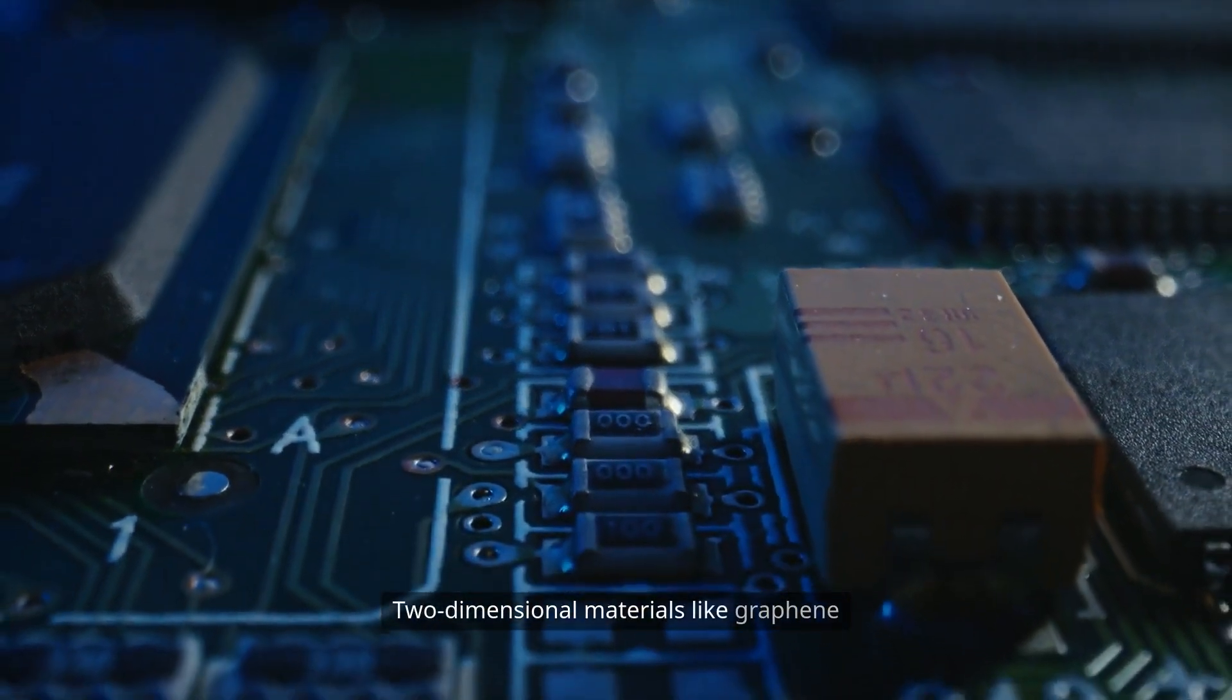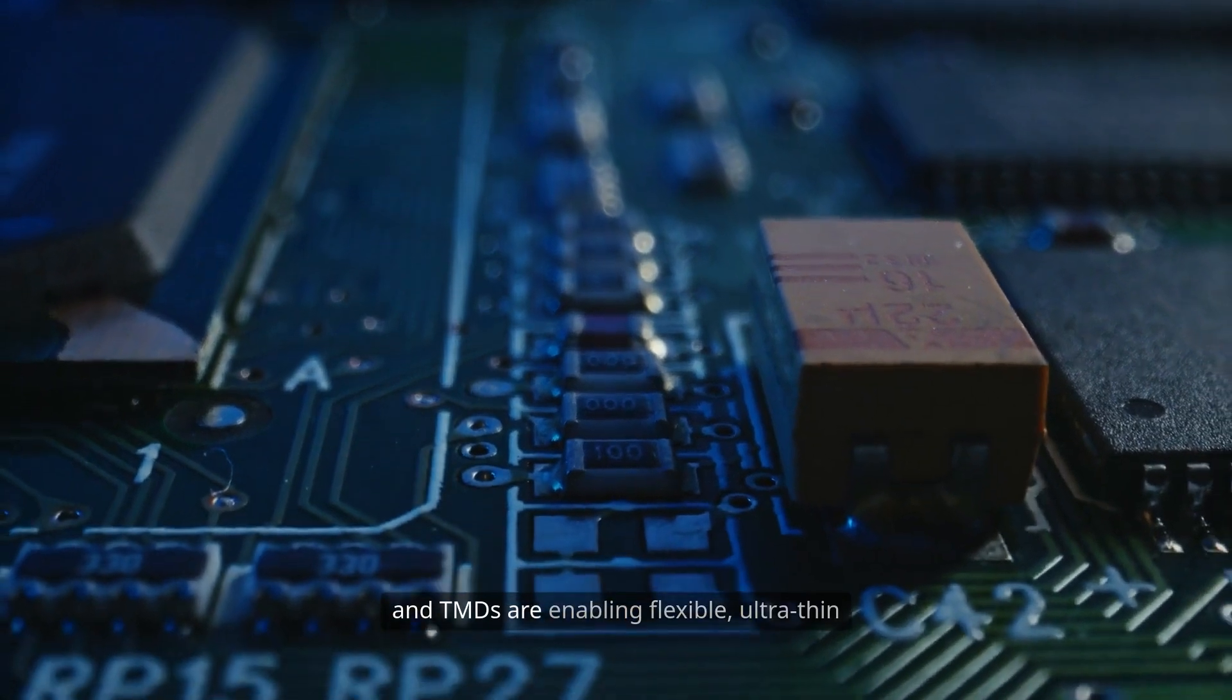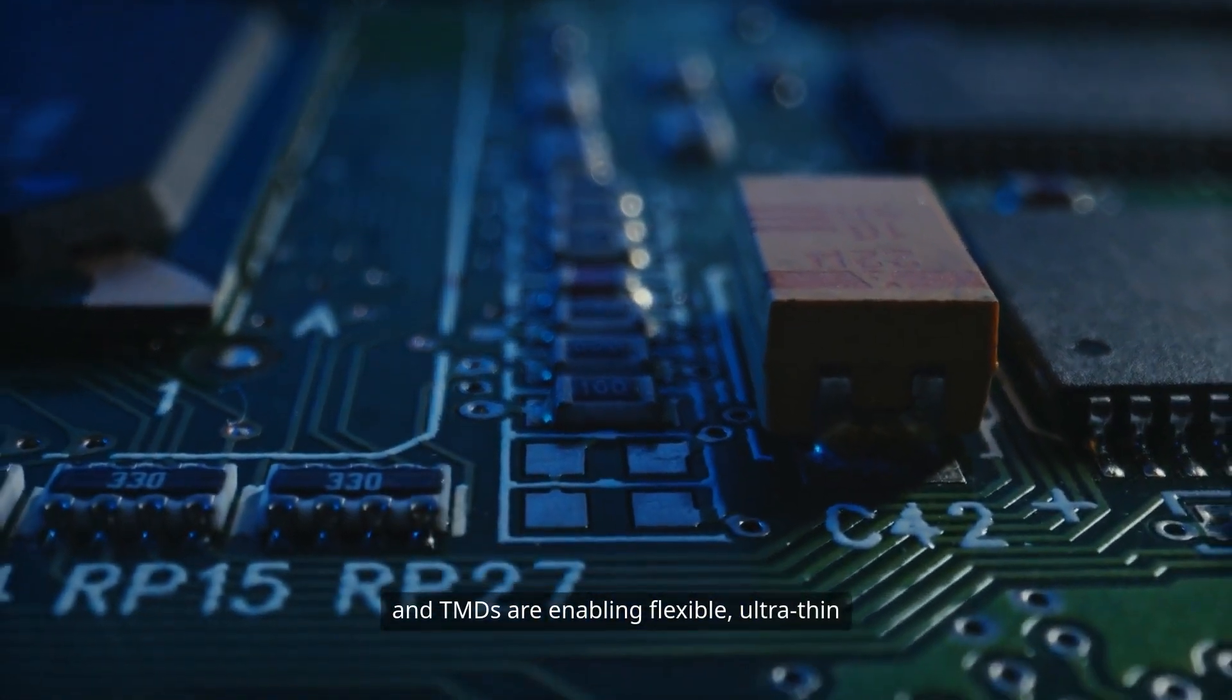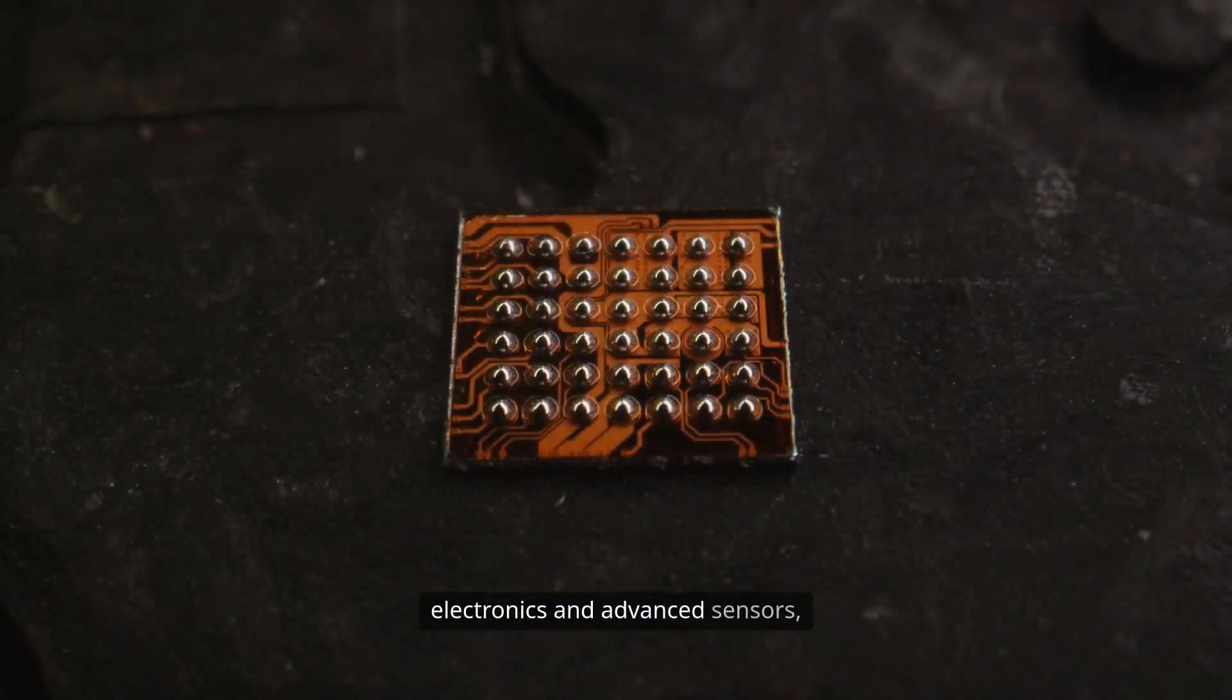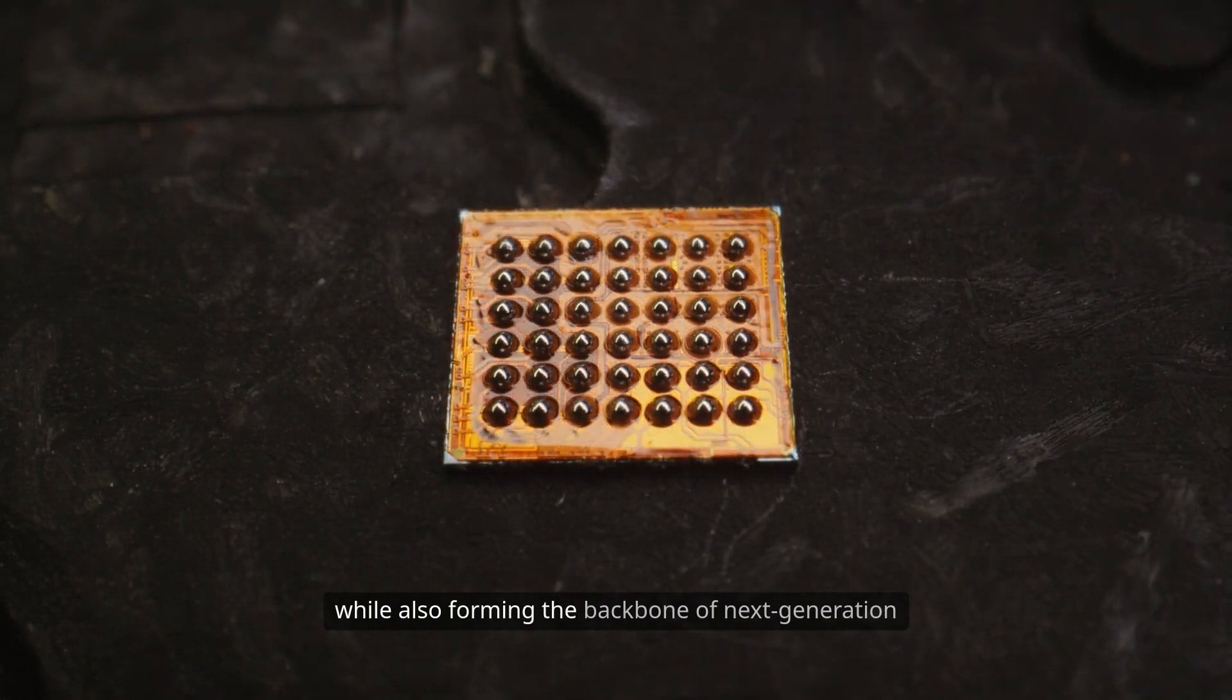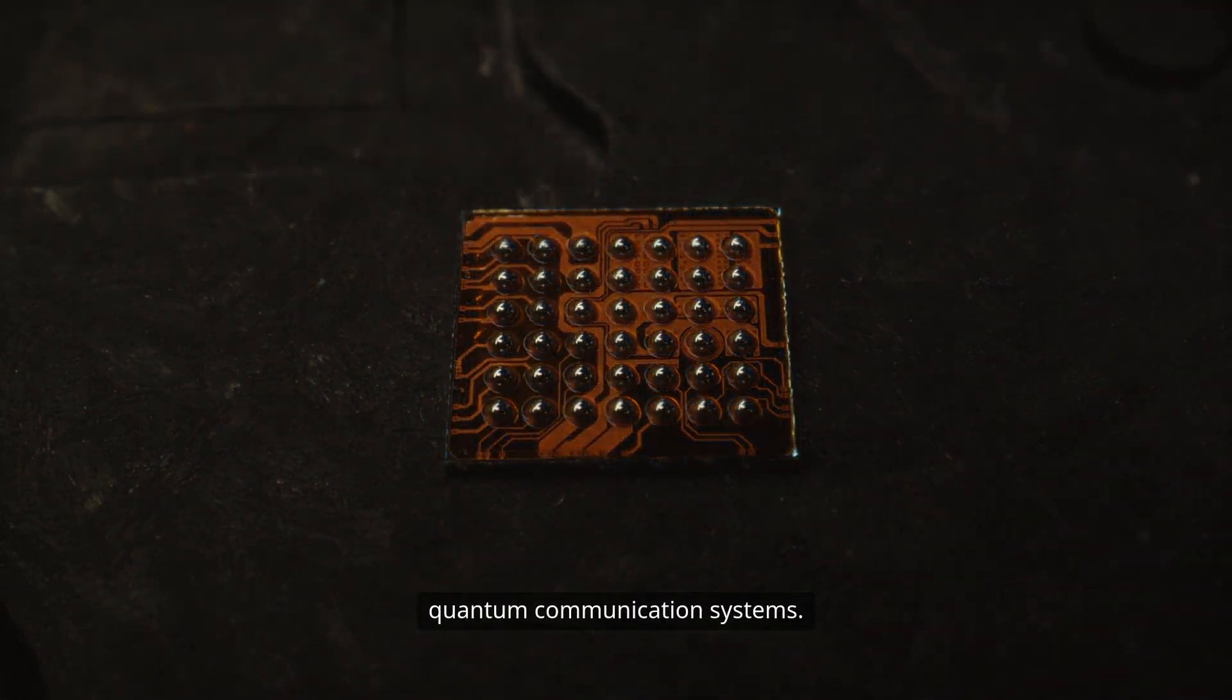Two-dimensional materials like graphene and TMDs are enabling flexible, ultra-thin electronics and advanced sensors, while also forming the backbone of next-generation quantum communication systems.